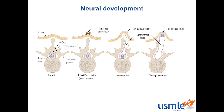Neural tube defects are the most common CNS malformations due to an incomplete closure of the neural tube. Spina bifida and anencephaly are two great examples. These defects can be prevented with the use of folate supplementation before conception and throughout the first trimester of pregnancy.